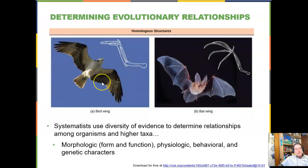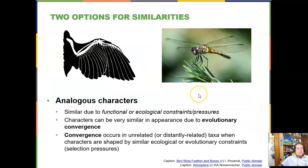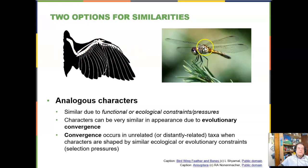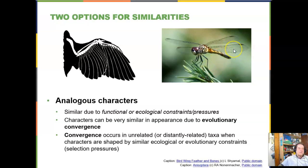True analogy occurs where there is no direct evolutionary relationship between structures. A dragonfly wing and a bird wing are separate solutions to the same problem — how to fly. Their common ancestor was a snail-like creature with no limbs at all, so these wings are most truly analogous structures. There's a lot in common because there are only so many ways to move through air using muscle power and a wing, making this a case of convergent evolution producing analogous characters from utterly different origins.